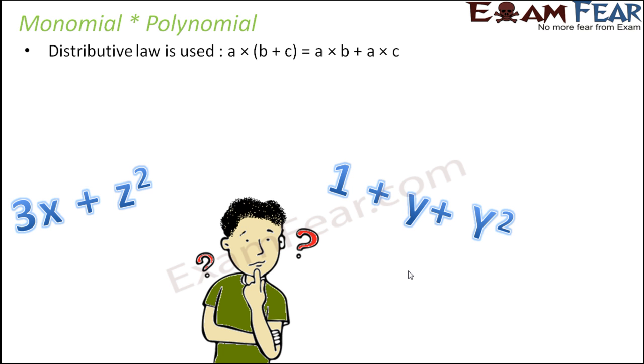Let's see. So in this case we make use of the distributive law of multiplication over addition. So I hope you remember the distributive law - it says that a multiplied by (b + c) is equal to a into b plus a into c.